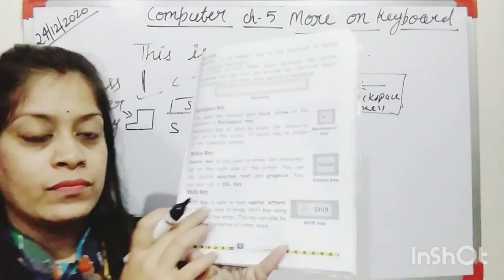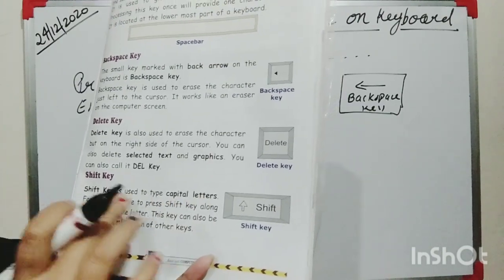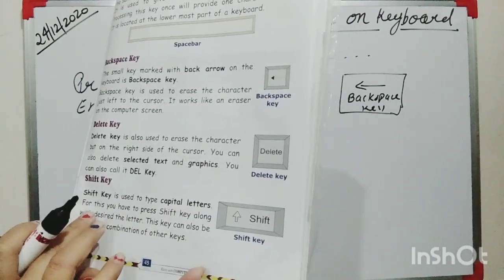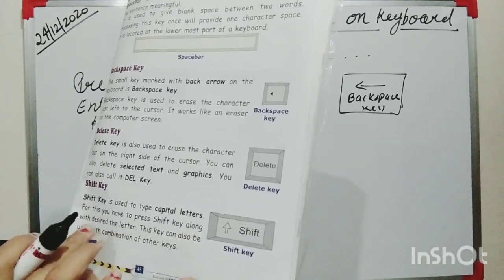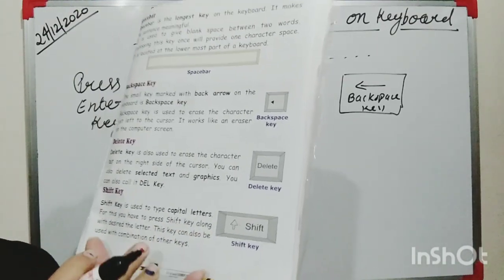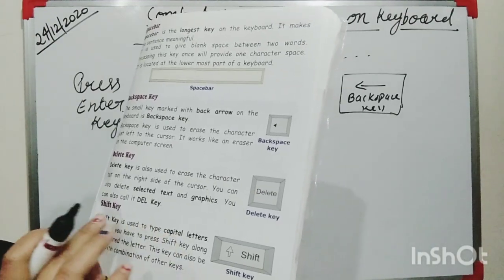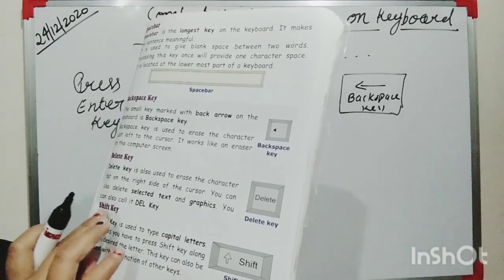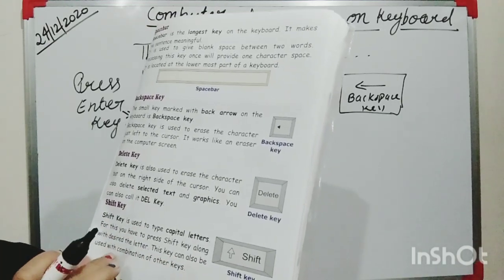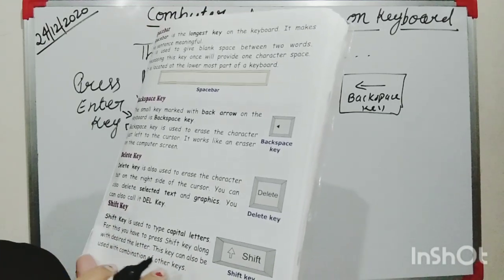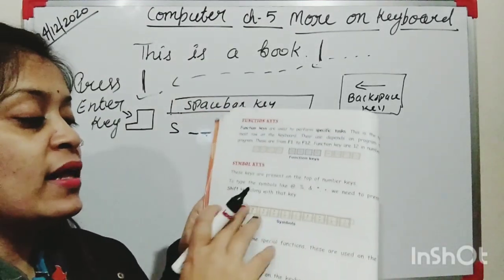Shift key is used to type capital letters. To do this, you have to press the Shift key along with the desired letter. This key can also be used in combination with other keys. The Shift key is also used with the symbol keys.